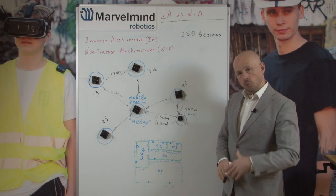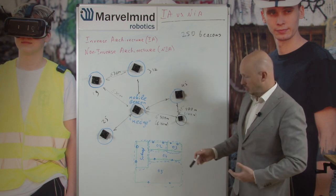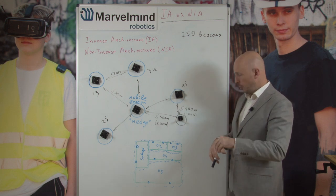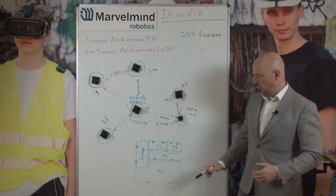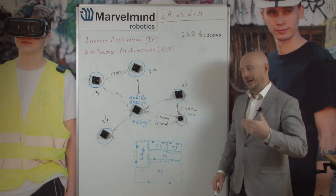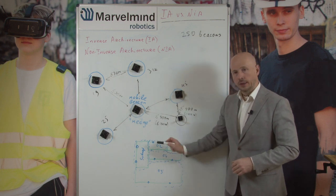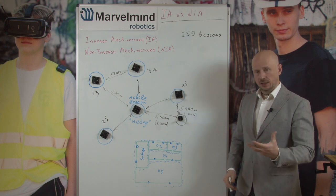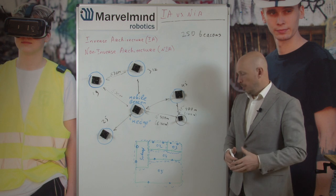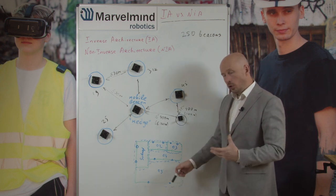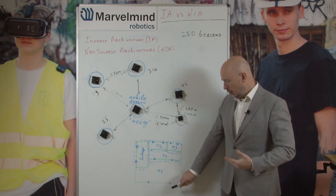Now let's talk about sub-maps — we will have a separate video on this. In terms of sub-maps and architecture building, both architectures work the same way. For 2D tracking across multiple rooms, each room needs at least two stationary beacons. The difference in sub-map complexity is that in non-inverse architecture all beacons use the same frequency (default 31 kHz), whereas in inverse architecture neighboring sub-maps cannot share the same ultrasonic frequencies, making network planning more complex.